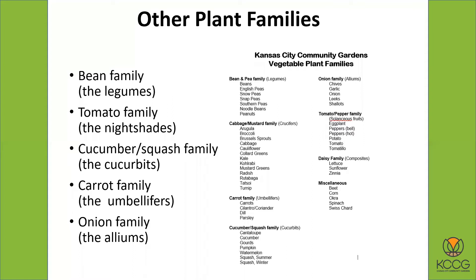We have a handout sheet at Kansas City Community Gardens that shows all these vegetable plant families — it's kind of nice to know which plants are in which families. One reason this is important is that when you're planting, you want to group plants by family, because ideally you'll be rotating your crops, moving them around in the garden. It's recommended that you move the families around in your crop rotation.